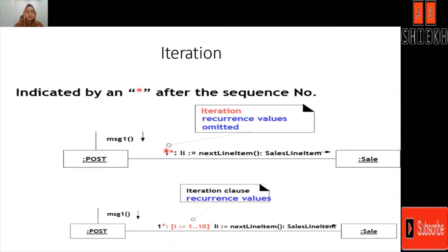Here the recurrence values are omitted from the transition, but here we have mentioned the recurrence values — i equals 1 to 10 — meaning this particular message will be called 10 times depending upon the value of i.